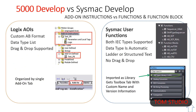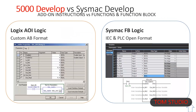When adding an Omron library, you get functions, function blocks, structures, namespaces, and more. Talk about the differences and advantages of custom functions — they use less memory, no instance name, etc.